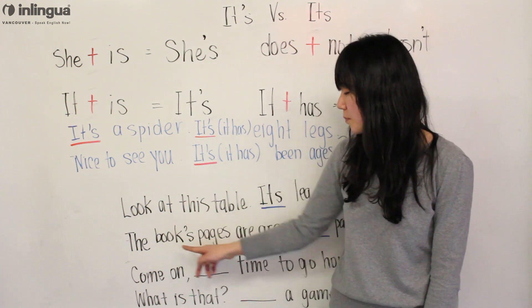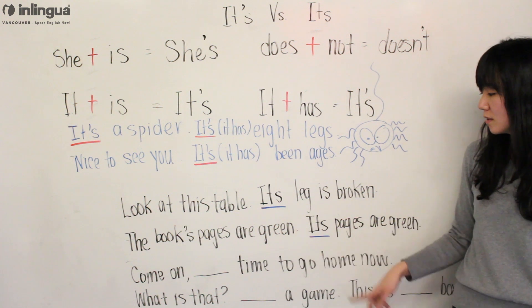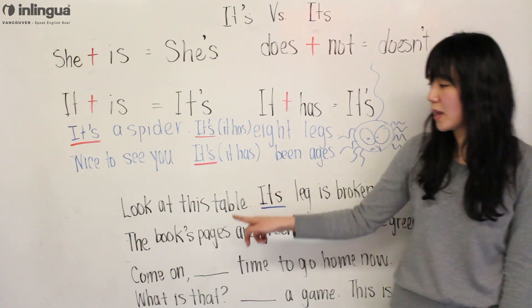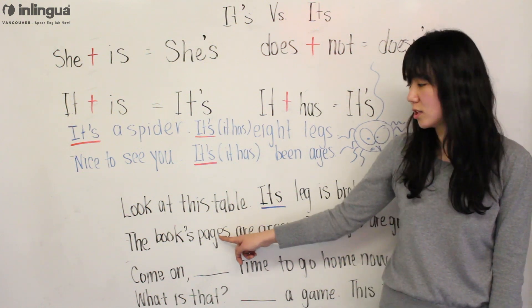Another one: The book's pages are green. ITS pages are green, meaning the pages of the books.